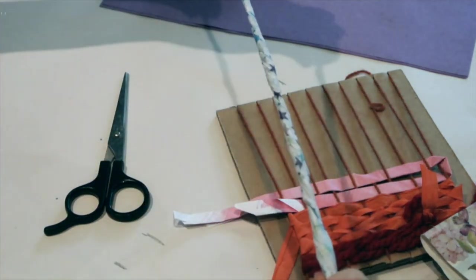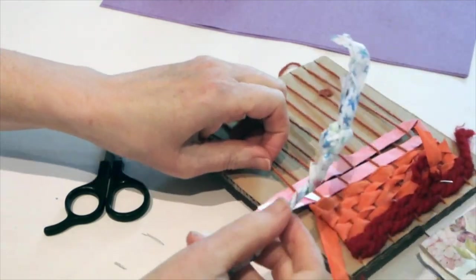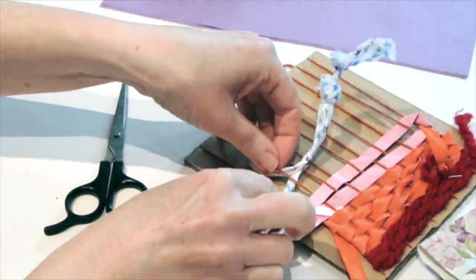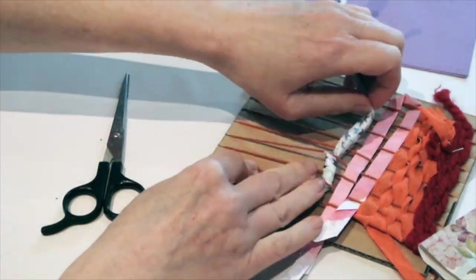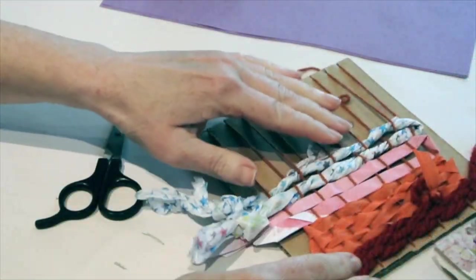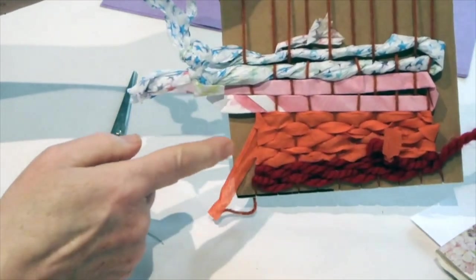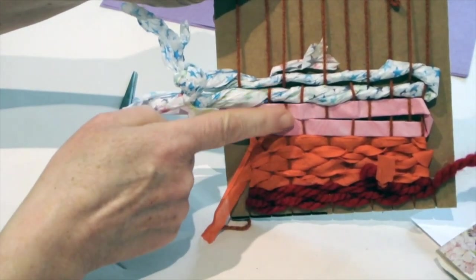I've now got my rolled paper. Again, I can thread this through the weaving. I've got to the end. You can see, I'm gradually building up my weaving, going from fabric to paper.